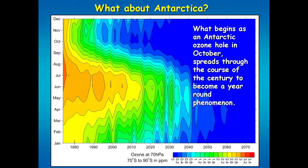What about Antarctica? The vertical axis shows the month of the year, and the year is across the bottom. This is ozone averaged between 70°S and 90°S, at 70 hectopascals in the stratosphere — about the level where the Antarctic ozone hole really gets a grip. In October and November the model simulates a nice Antarctic ozone hole. But as we proceed through the century and the equivalent effective stratospheric chlorine rises, what had been a seasonal phenomenon — ozone depletion over Antarctica only in October and November — now becomes a year-round phenomenon. You have Antarctic ozone hole year-round.